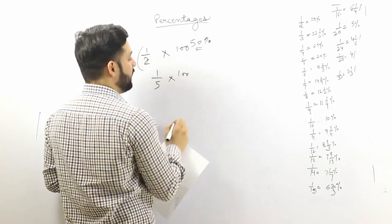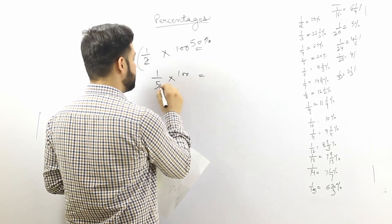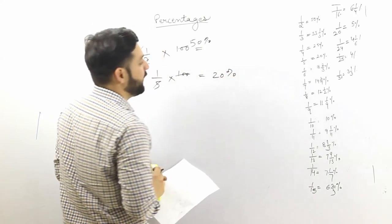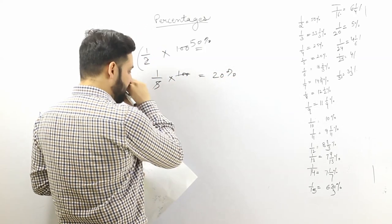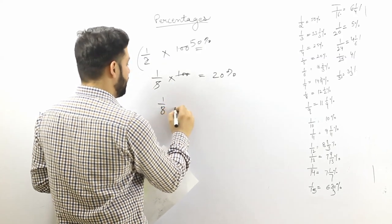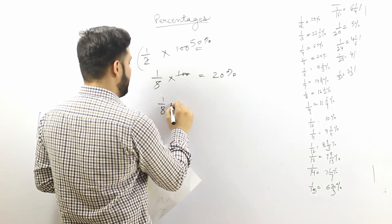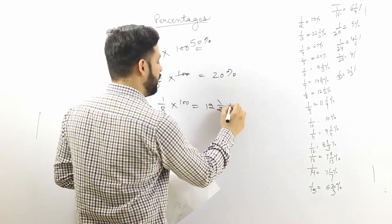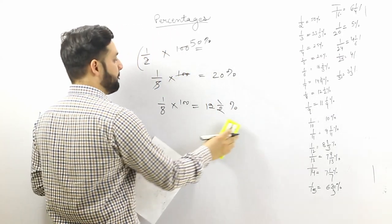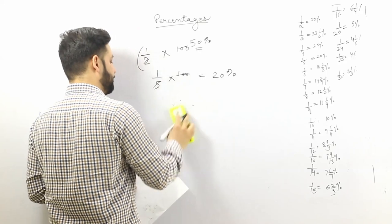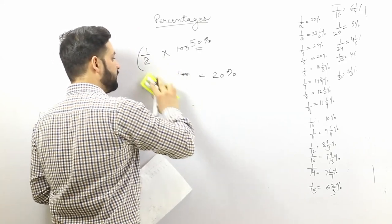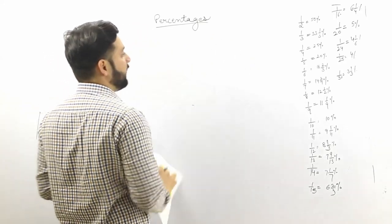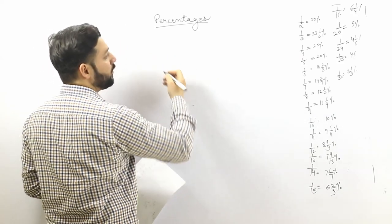Similarly, if we want to calculate 1/5, multiply it by 100 — it becomes 20 percent. In the same way, 1/8 multiplied by 100 becomes 12 and 1/2 percent.